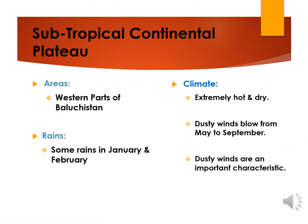Areas of the Subtropical Continental Plateau include the western parts of Balochistan. This region receives some rains only in January and February. The climate of this region is extremely hot and dry. Dusty winds blow from May to September, and these dusty winds are an important characteristic of the climate of this region.